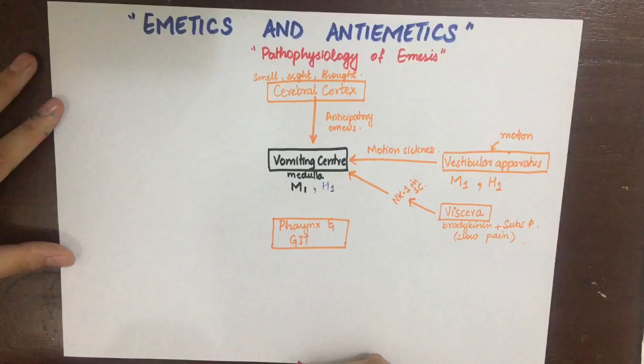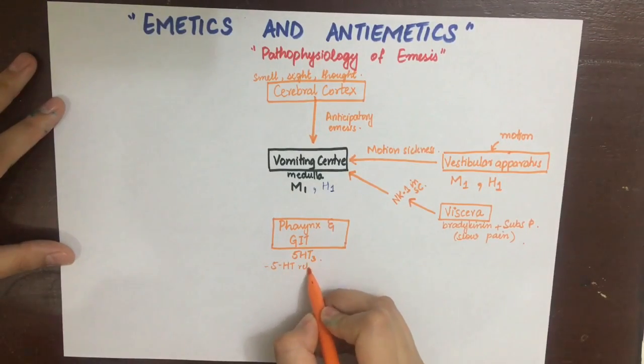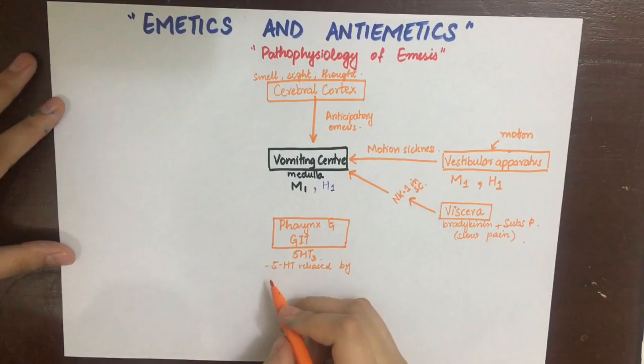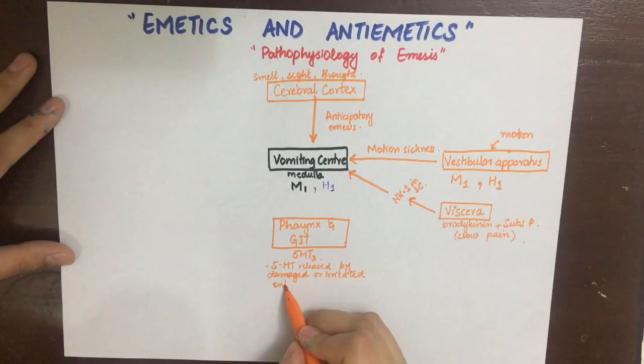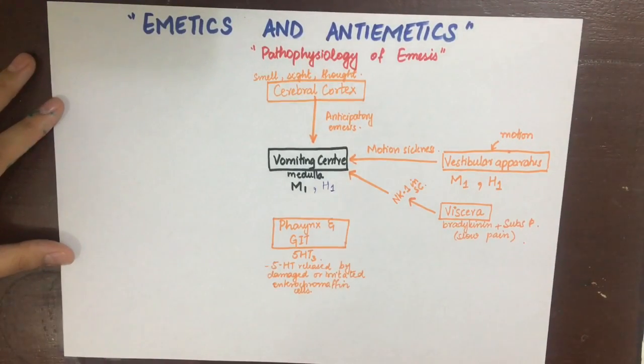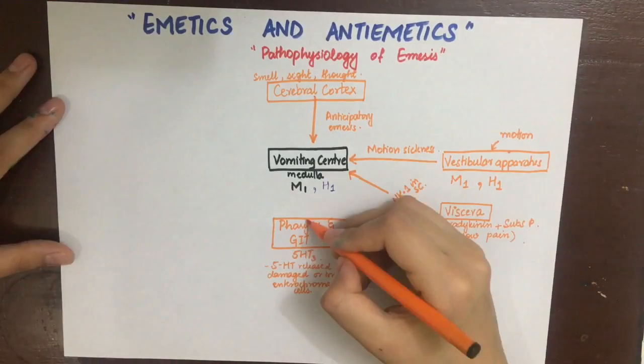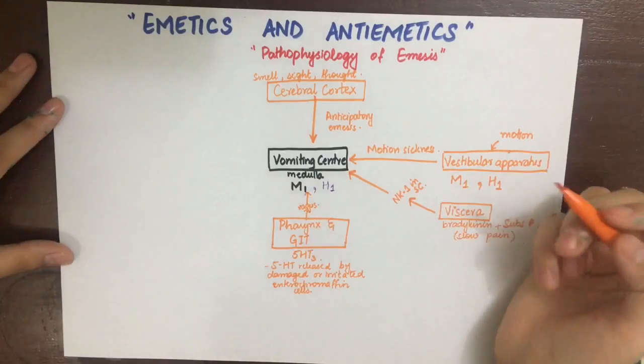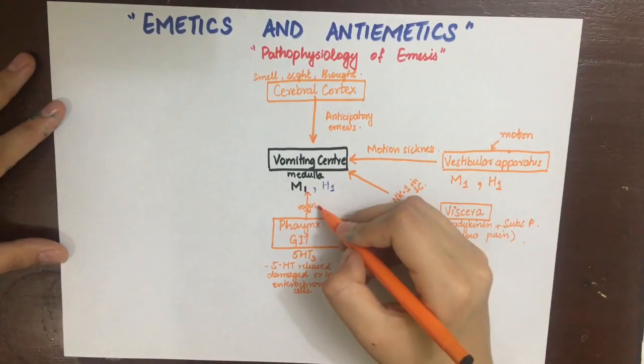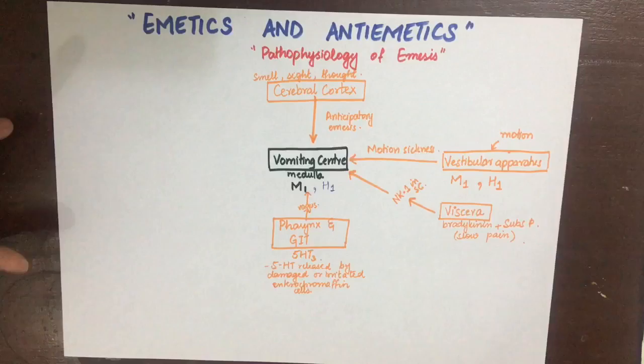Fourth, the pharynx and GIT can also cause vomiting. The GIT mostly has enterochromaffin cells which release serotonin. Any irritation to the gastric mucosa by chemotherapy, radiotherapy, or mechanical irritation to the pharynx can increase serotonin release and tell the vomiting center via the efferent vagus going to the nucleus tractus solitarius and then to the vomiting center.